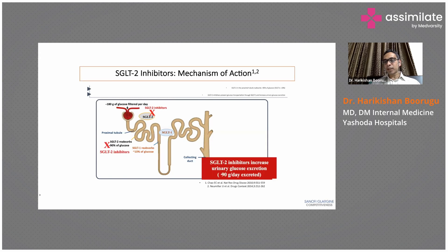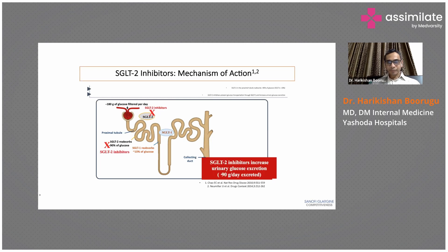Oral semaglutide has been available in our country only since January. GLP-1 agonists are generally injectable drugs. We have talked about the natural effects of GLP-1 produced from the gut — enhancing insulin secretion, reducing glucagon secretion, etc. You can give GLP-1 agonists exogenously to supplement the lower GLP-1 levels seen in patients with diabetes.